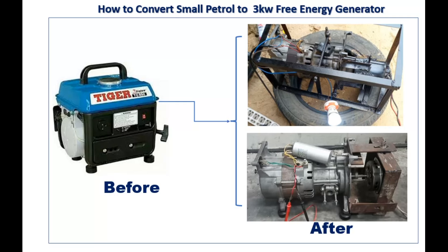Today you can convert this type of generator — a small generator — into a free energy generator. Why do we bring this generator here? This generator is most common in developing countries like Africa and Asia and other countries. It is very, very useful because it consumes less fuel — it contains 4 liters of petrol, and with 4 liters of petrol you can run this generator successfully.